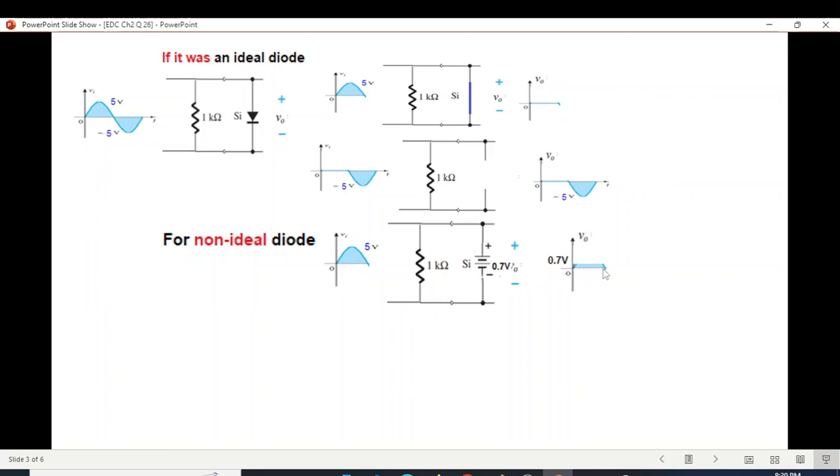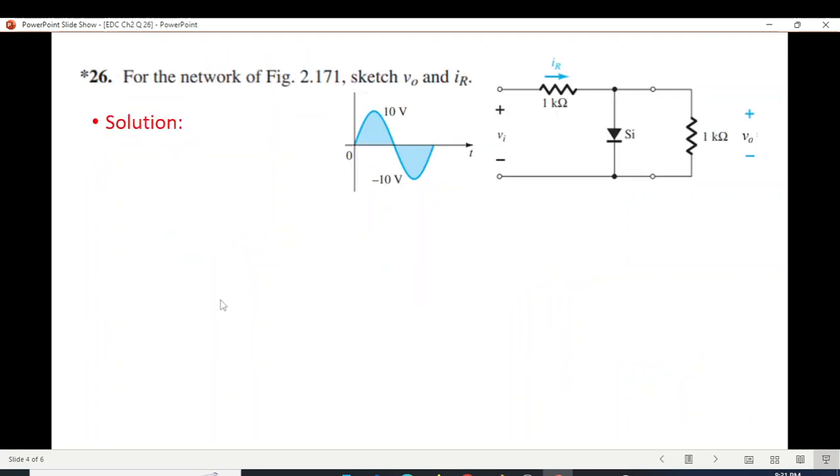And for the negative half, it will just behave like here. Diode will open. And so the input voltage will be at the output. So for non-ideal case, the output will be, this is for the positive half, this is for the negative half. So we'll take this concept in solving the problem. Because when in the question, it is not mentioned that the diode is ideal, that means we have to assume that the diode is non-ideal.